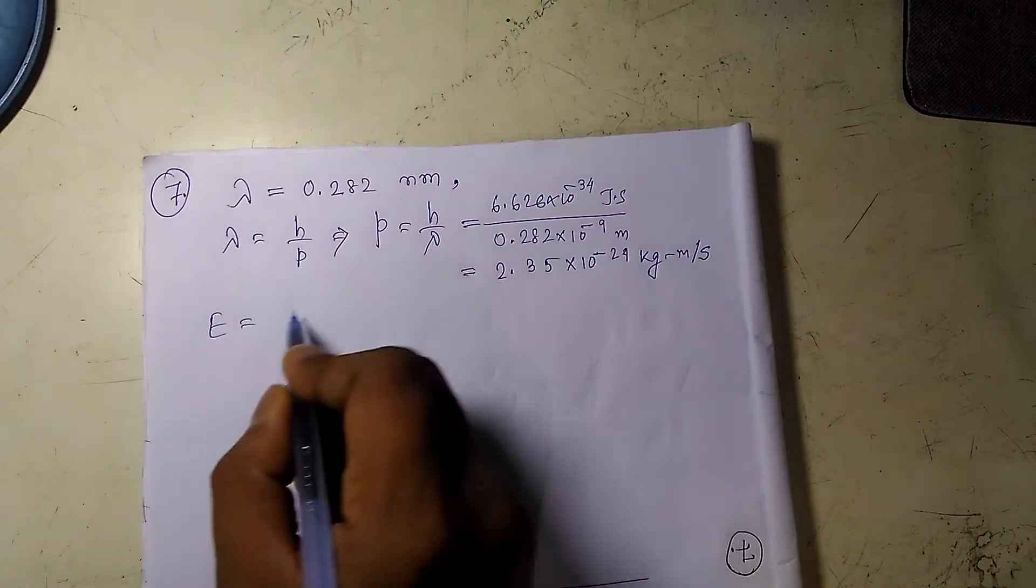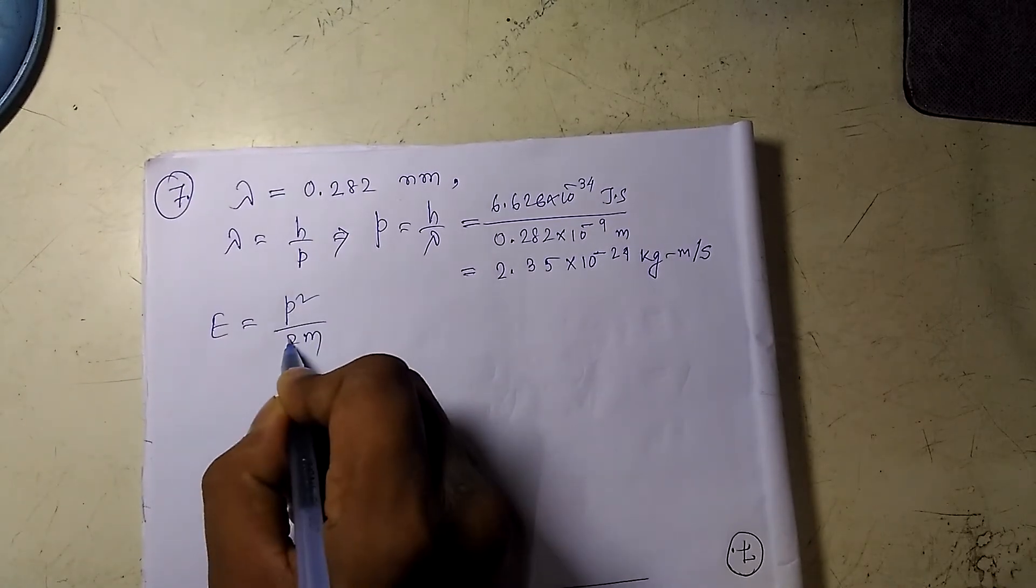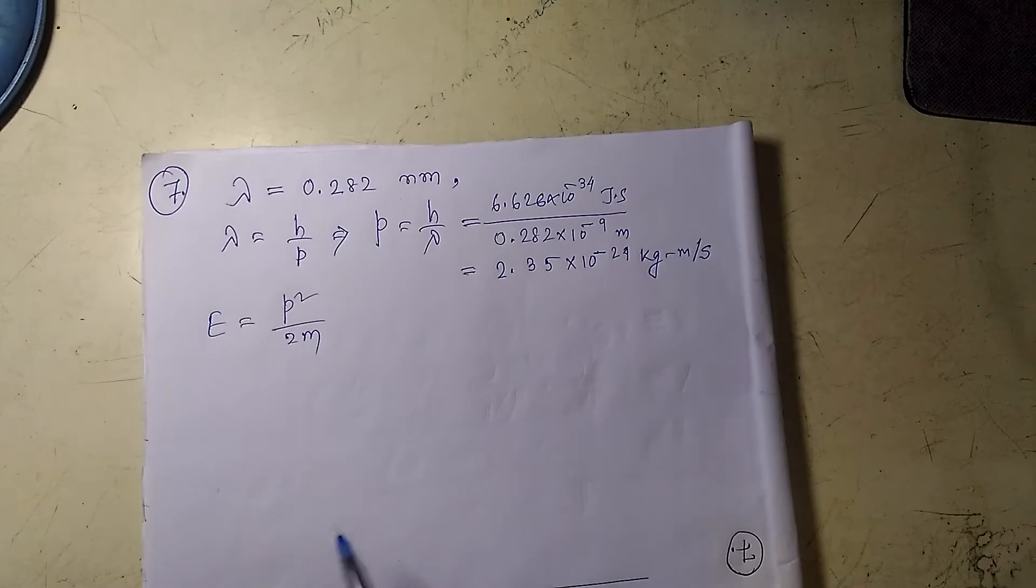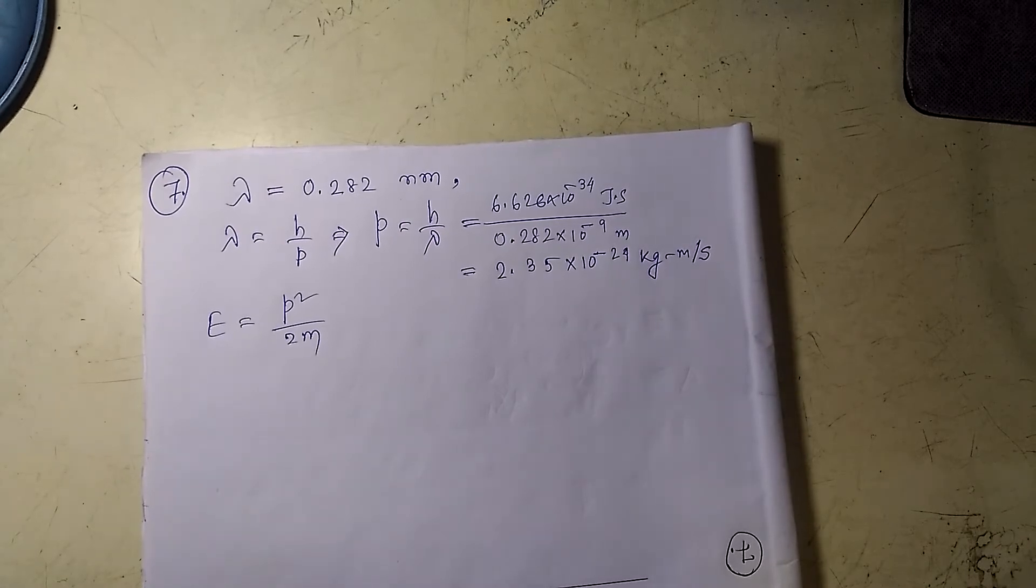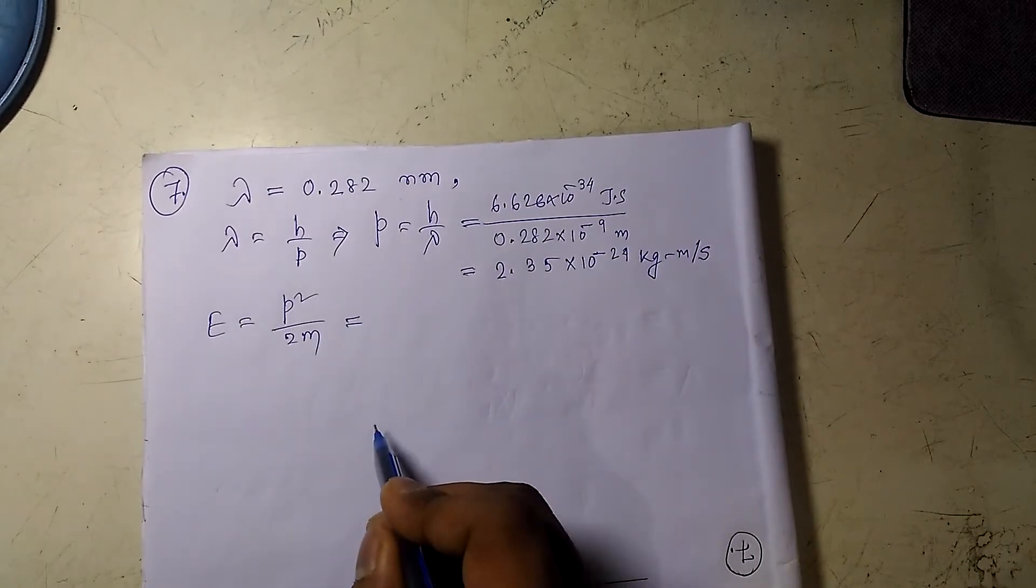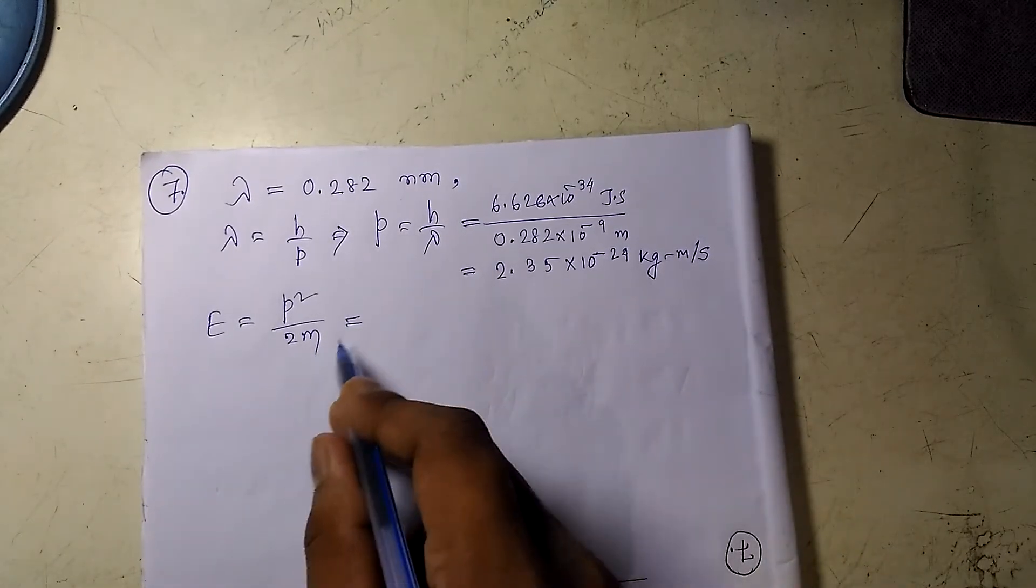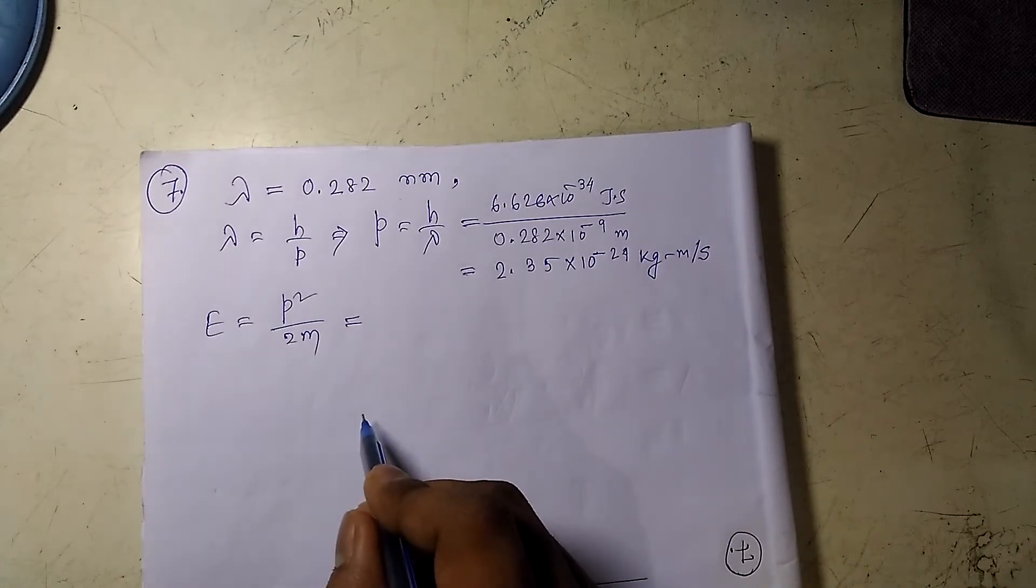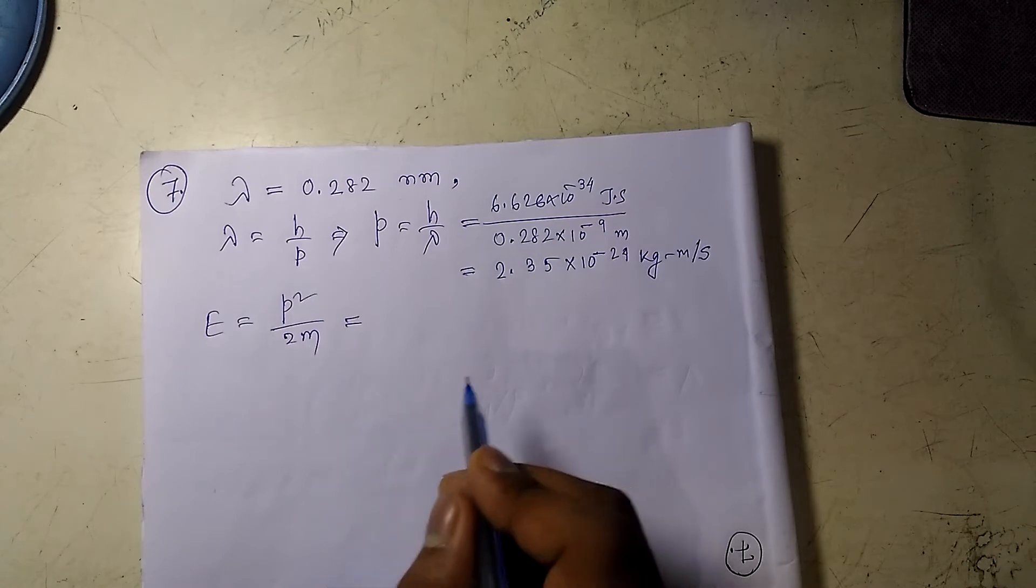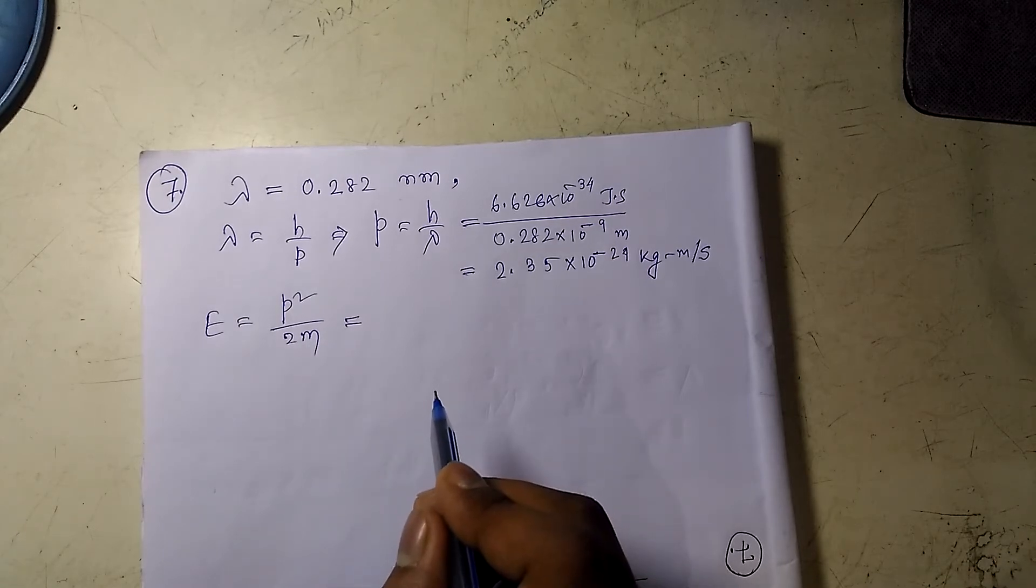Energy is equal to P squared by twice M. Because we know energy equals half M V squared. If I multiply half M in both upper and lower part, we will just get M V whole squared by twice M. So M V is nothing but P. So it would be just P squared by twice M. So if I put the value of P and M, M is the mass of the neutron, which is like 1.675 times 10 to the power minus 27.